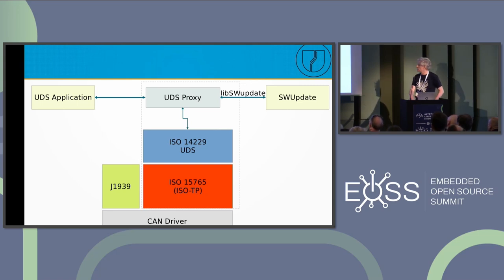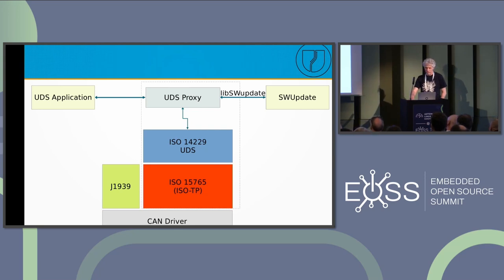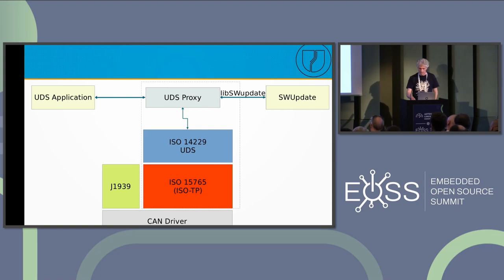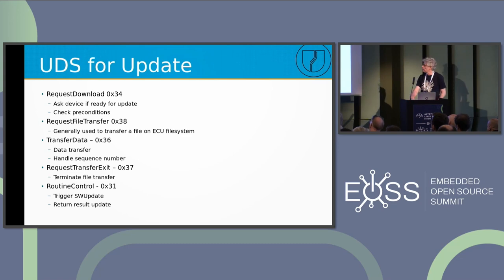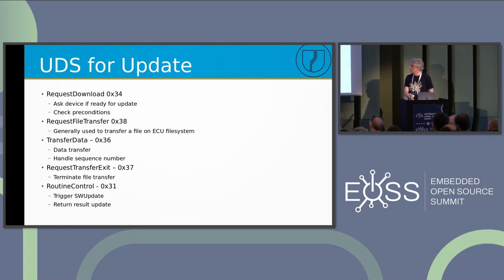SWUpdate also provides a library to send the package and to monitor how an update is progressing. Incoming commands from the CAN bus are then forwarded to SWUpdate if they are related to the update process.